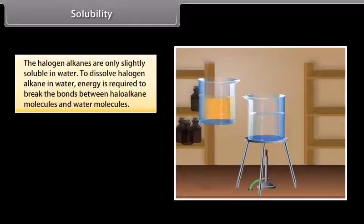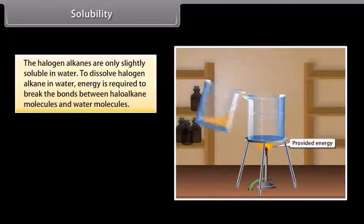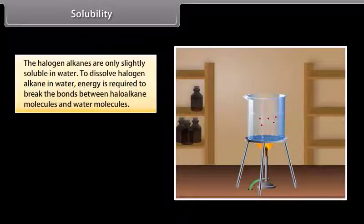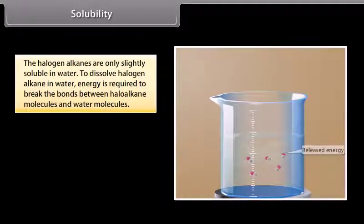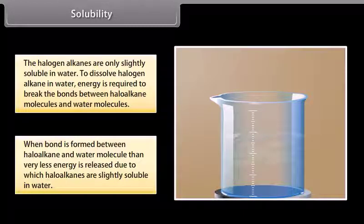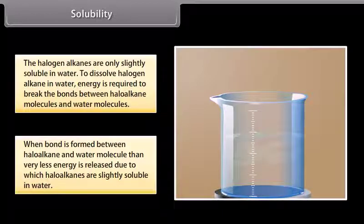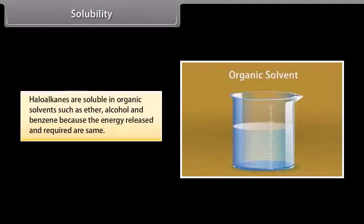Haloalkanes are only slightly soluble in water. To dissolve haloalkanes in water, energy is required to break the bonds between haloalkane molecules and water molecules. When bonds form between haloalkane and water molecules, very little energy is released, which is why haloalkanes are slightly soluble in water. Haloalkanes are soluble in organic solvents such as ether, alcohol, and benzene, because the energy released and required are approximately equal.